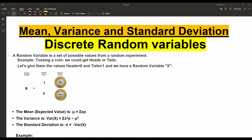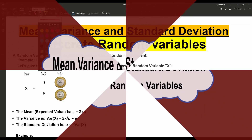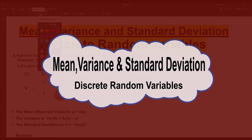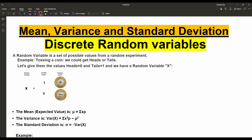Hello friends, today our topic is the mean, variance and standard deviation for the discrete random variables. In the previous video lectures, we have already discussed what is the mean of a random variable, and there are two types of random variables: discrete and continuous.